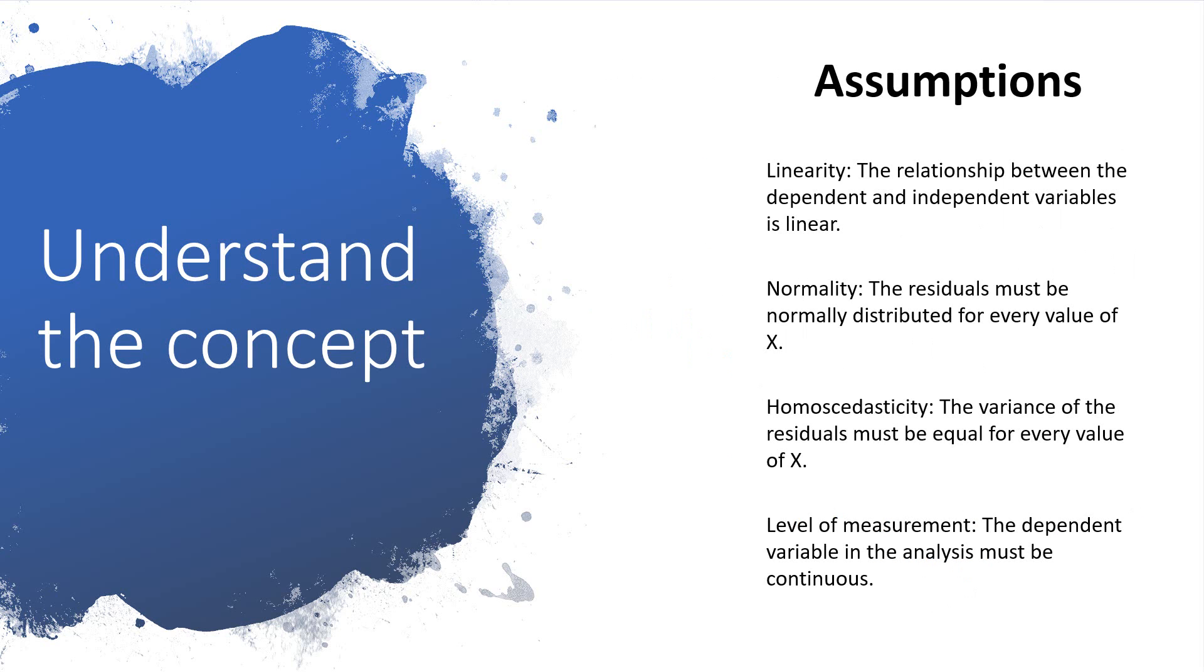The residuals are also important in determining if regression is appropriate for the sample. One assumption is that the relationship between the independent and dependent variables is linear. Regression is unable to account for any curvature unless more advanced techniques are used. In addition, the residuals must be normally distributed for every value of x and have equal variance throughout. Having the correct level of measurement for the outcome variable is also important for the analysis to run correctly. Don't let this overwhelm you. Intellectus will automatically check assumptions when you conduct your regression.